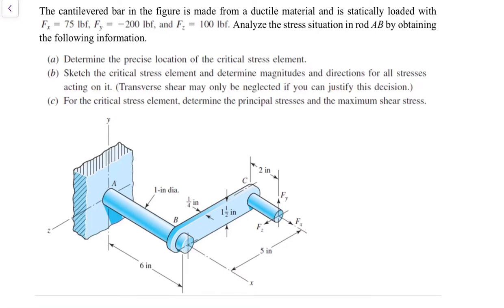In this example, we will discuss a combined loading problem. We have a crankshaft that is loaded in three directions: x, y, and z. This setup creates stresses of different kinds in rod AB. We're interested in the stress state of rod AB — isolating the different types of stresses, understanding their magnitudes, and then developing the stress state of the most critical point on that rod.